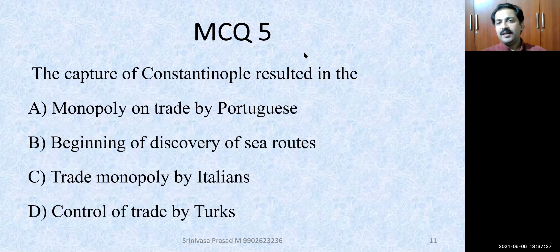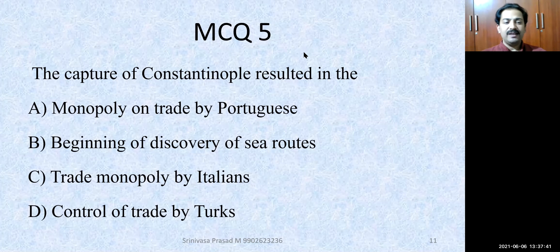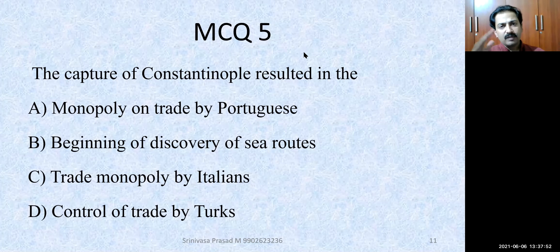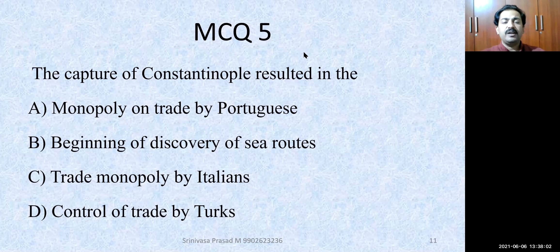MCQ number 5: The capture of Constantinople resulted in — monopoly on trade by Portuguese; beginning of discovery of sea routes; trade monopoly by Italians; or control of trade by Turks. The correct option is: beginning of discovery of sea routes. As soon as Constantinople was captured by the Ottoman Turks, the trade route between the east and the west was closed, which led to the discovery of sea routes to India.